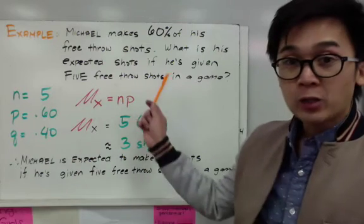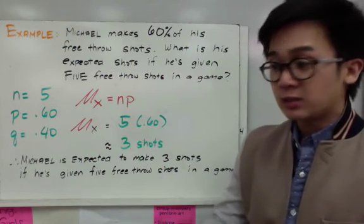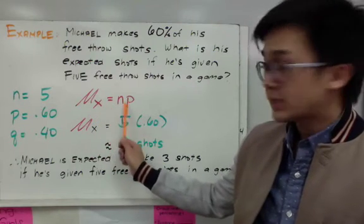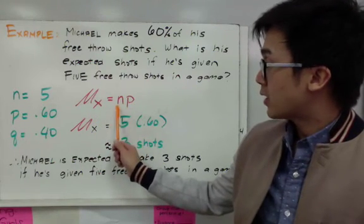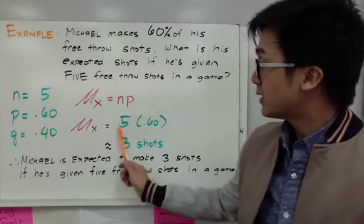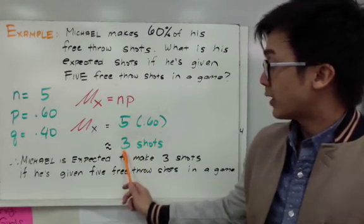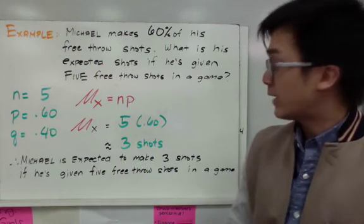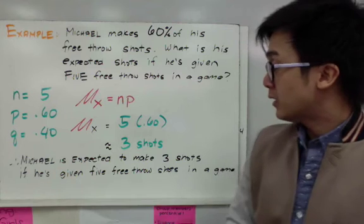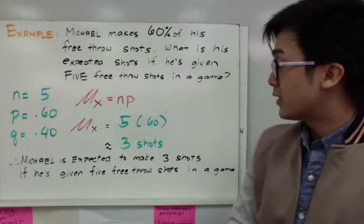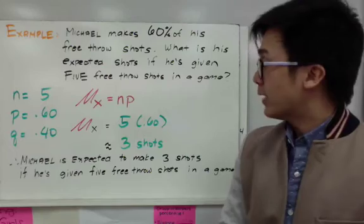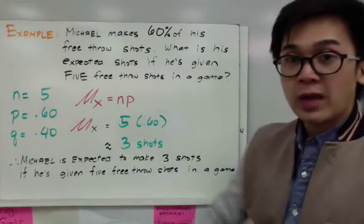This is a binomial distribution because it satisfies the four conditions. For the mu of x, it's equal to n times p, where n is the number of trials and p is the probability of success. Multiplying gives you 3. So there is an expected value of 3 shots. Therefore, Michael is expected to make 3 shots if he's given 5 free throw shots in a given game, using the formula for the mean.